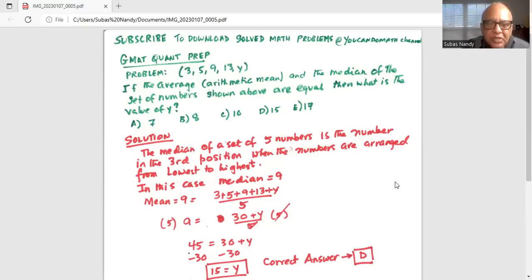So it has been told to us that mean is equal to the median. So mean is equal to 9, equal to 3 plus 5 plus 9 plus 13 plus Y, which we do not know, divided by 5. That is the arithmetic average.